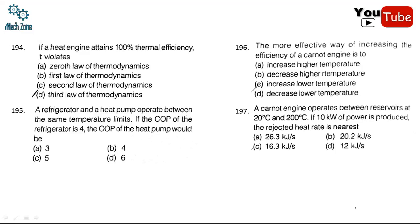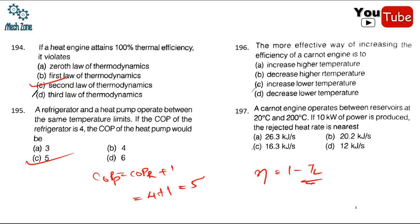If a heat engine attains 100% thermal efficiency, it violates the second law of thermodynamics, which states no engine can have 100% efficiency. Question 195: if COP of refrigerator = 4, then COP of heat pump = COP_refrigerator + 1 = 5. The more effective way to increase Carnot efficiency is to decrease the lower temperature, since T_high cannot be raised beyond certain limits. Therefore the correct answer is option D — decrease the lower temperature.